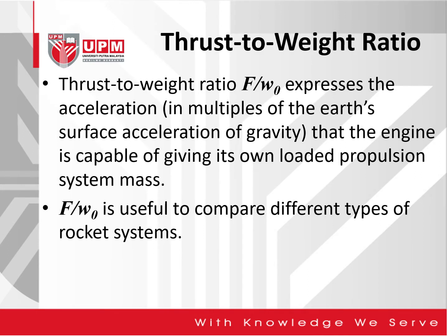In terms of the thrust to weight ratio, it can be expressed as F over W0, where F is the thrust and W0 is the weight at initial. This expresses the acceleration in multiples of Earth's surface acceleration of gravity that the engine is capable of giving its own loaded propulsion system mass. The thrust to weight ratio F over W0 is useful to compare different types of rocket systems, as shown in our earlier video on this particular topic.